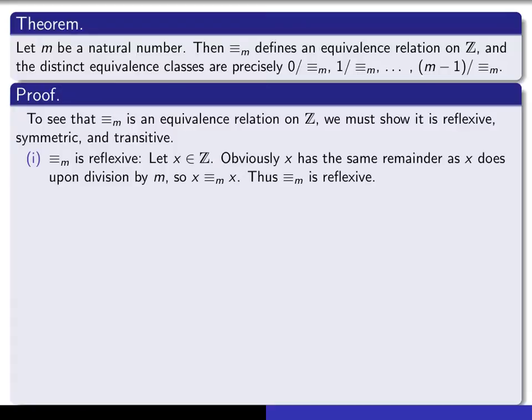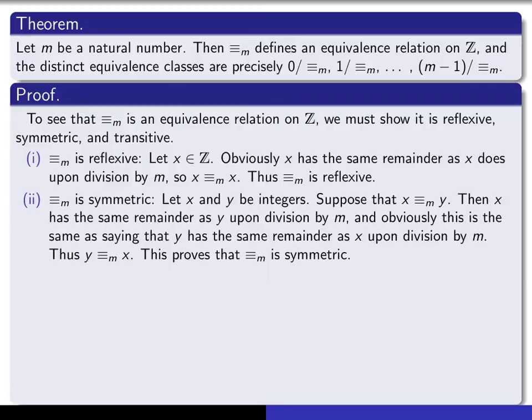For symmetry: if x and y are integers and you assume that x is related to y, you have to deduce that y is related to x. To say that x is related to y is to say that x has the same remainder upon division by m as y does, and that's obviously the same thing as saying that y has the same remainder upon division by m as x does, and therefore y is related to x. That proves it's symmetric.